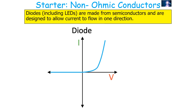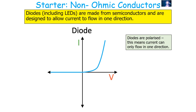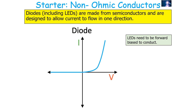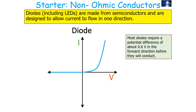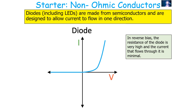Diodes, which include LEDs (light emitting diodes), are made from semiconductors and are designed to allow current to flow in one direction only, because diodes are polarised. We call the direction in which current is allowed to flow forward bias — LEDs and diodes need to be forward biased to conduct. Most diodes require a potential difference of about 0.6 volts in the forward direction before they will conduct; we call this the threshold voltage. In reverse bias, the resistance of the diode is very high and the current that flows through it is minimal.